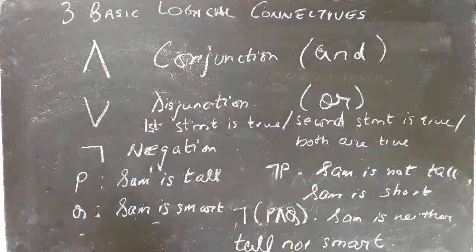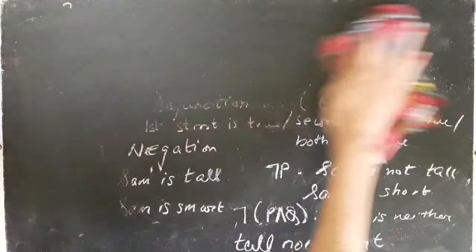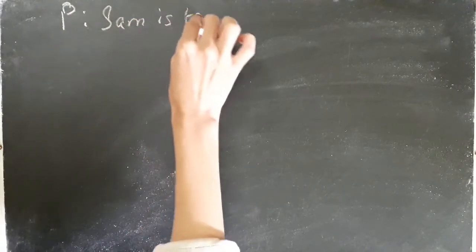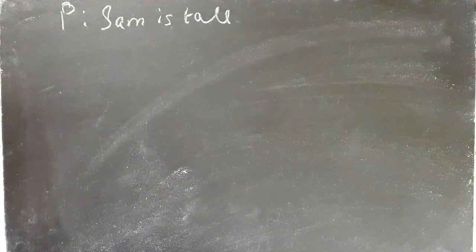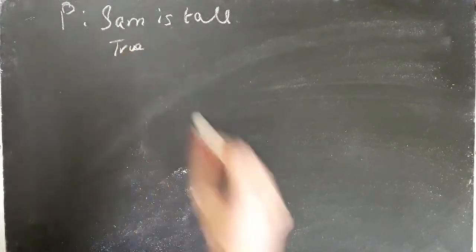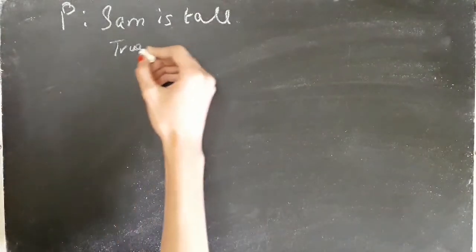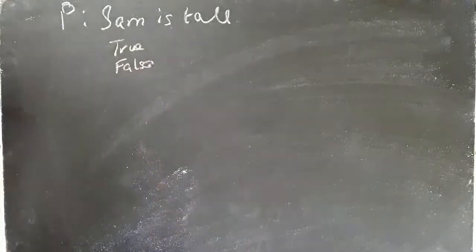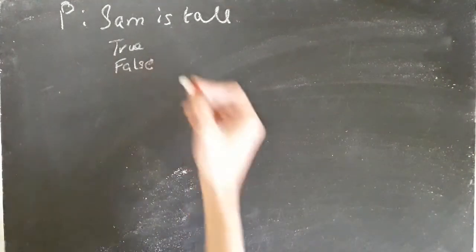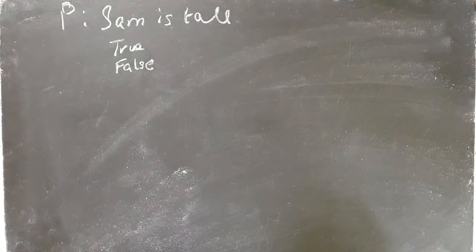So this way we have learned the three basic logical connectives. Now we move on to truth tables. Every propositional sentence has either a true value or a false value. For example, if Sam is indeed tall, the truth value of the statement is true; if he is short, it is false. Every propositional statement has a truth value which can be either true or false, and with these truth values we can make truth tables.